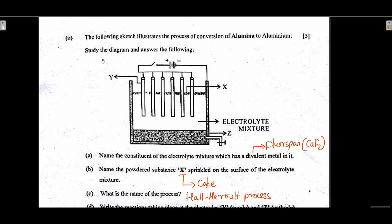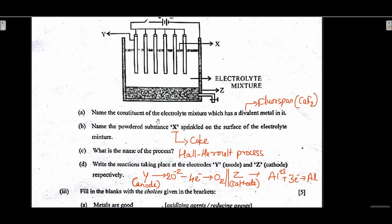Next question on alumina to aluminium conversion. Name the constituent of the electrolyte mixture which has a divalent metal in it. The electrolyte mixture contains cryolite, fluorspar, and alumina. The divalent metal is calcium, so fluorspar — calcium fluoride — is the answer. Write the name, not the formula. The powdered substance X sprinkled on the surface of the electrolyte mixture is powdered coke.